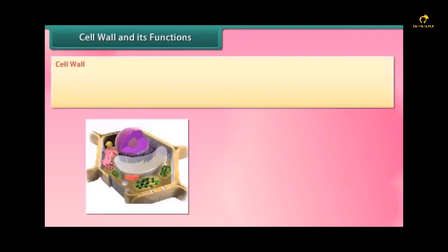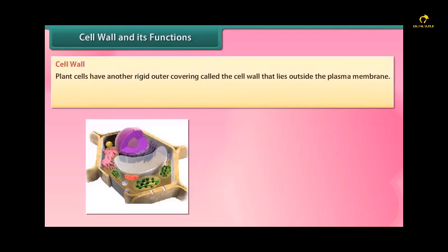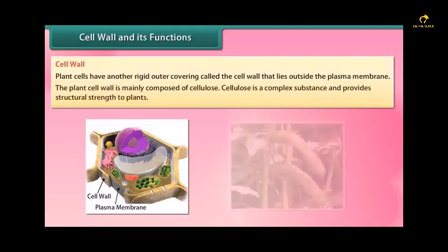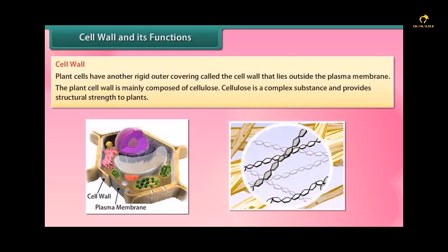Cell wall and its functions: Plant cells have another rigid outer covering called the cell wall that lies outside the plasma membrane. The plant cell wall is mainly composed of cellulose.